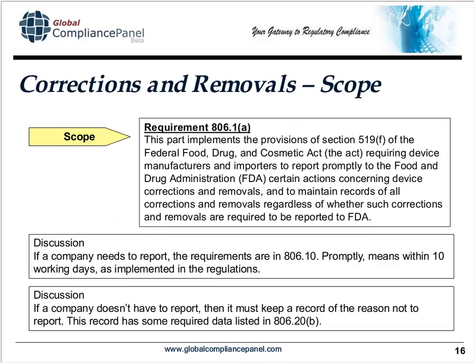Let's start with the requirement, which comes from Part 806 — this is one of the less well-known parts of the regulation. The regulation implements provisions of the Food, Drug, and Cosmetic Act related to corrections and removals. If a company needs to report, the requirements are in 806.10 and they must report promptly, defined as 10 working days. Sometimes you don't have to report — there are exceptions for corrections or removals not requiring FDA notification — but then you must keep a record explaining why you didn't report. That record has specific required data elements found in 806.20(b).